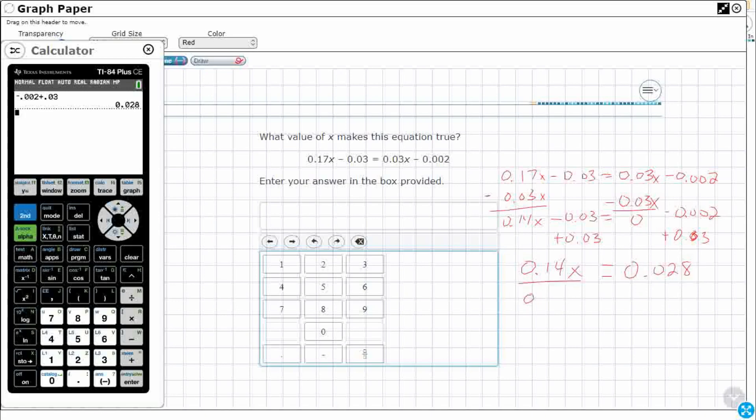Now we just divide both sides by 0.14. We should get our answer. Let's divide the answer by 0.14. Looks like it could be a very simple two-tenths, 0.2.